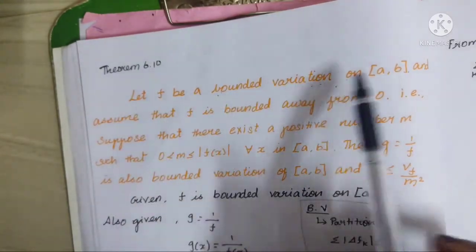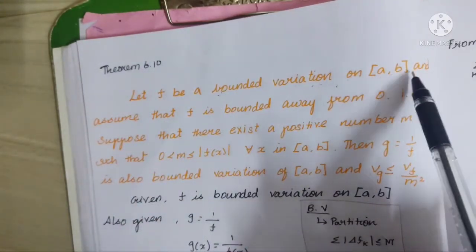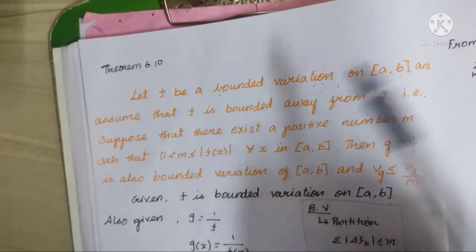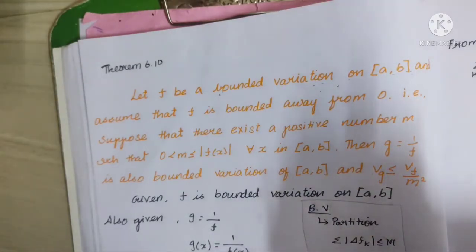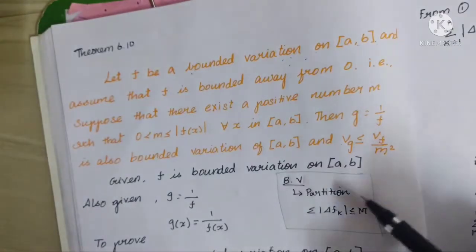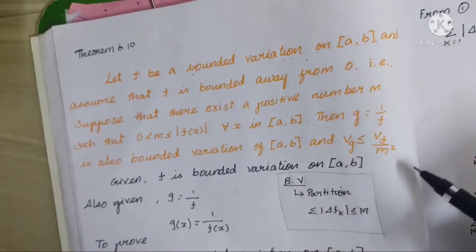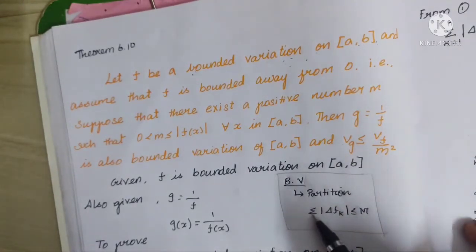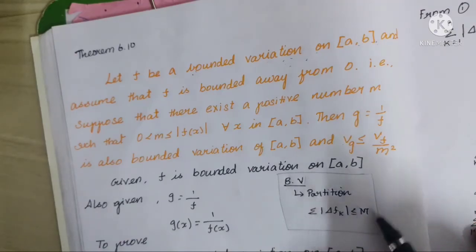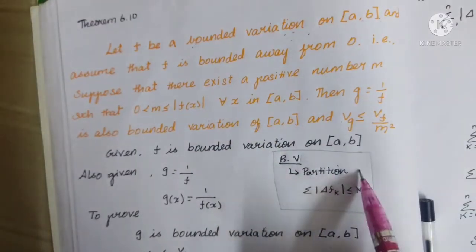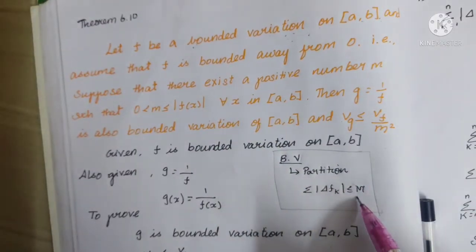Let f be of bounded variation on the closed interval. The definition of bounded variation is linked in the description. The partition is a set of points, and the condition is that the summation of |Δf_k| is less than or equal to M. That is the definition of bounded variation.